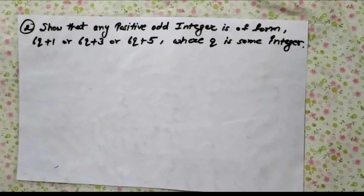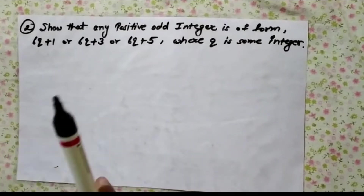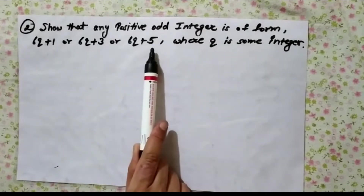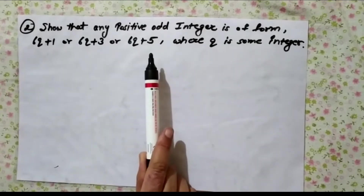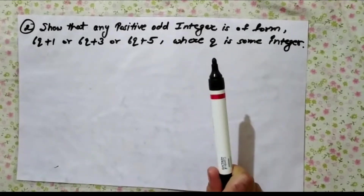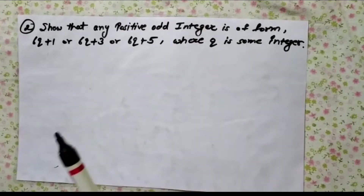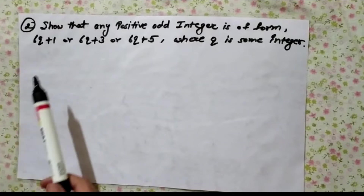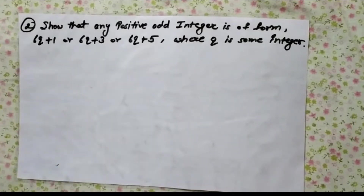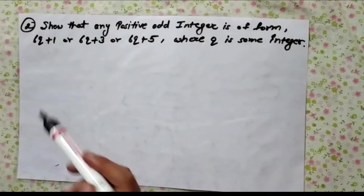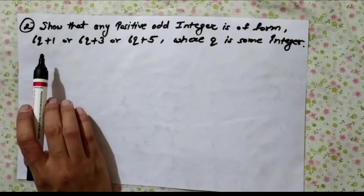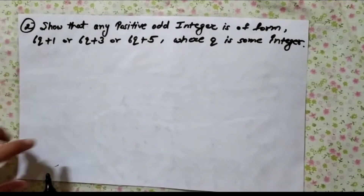First of all, see the question carefully. Here the numbers 1, 3, and 5 — all three numbers are odd numbers. Now, how to find a general method in which every number can be expressed in this form? It is a form of bq plus r. You have to use Euclid's division algorithm to solve this.